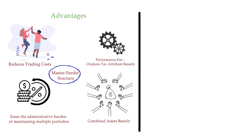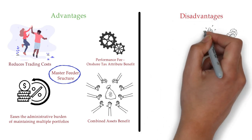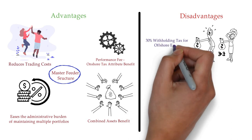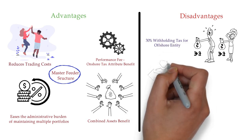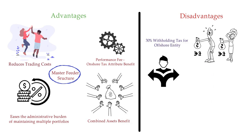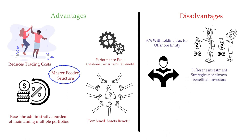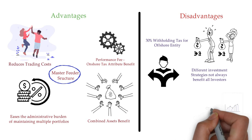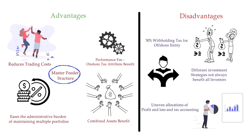The fund's combined assets can be used to obtain greater financing benefits. Disadvantages of a master-feeder structure include: an offshore fund is generally subject to 30 percent withholding tax on US dividends; the different investment strategies available to a master-feeder do not offer advantages to all investors at all times; and there can be uneven allocations of profit and loss and tax accounting.